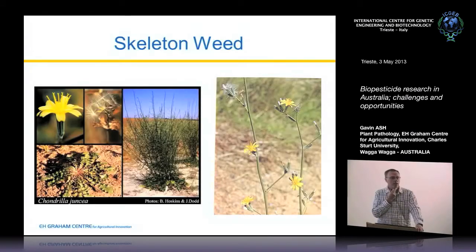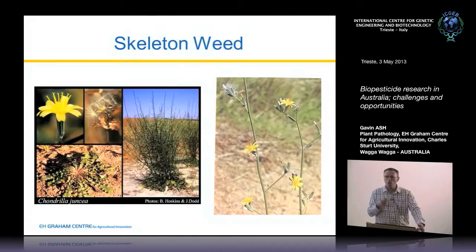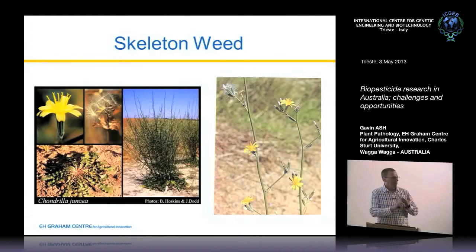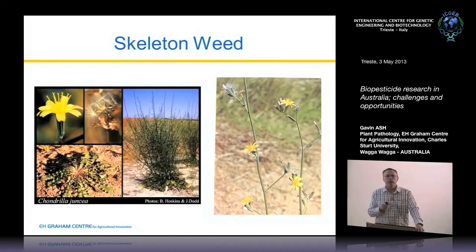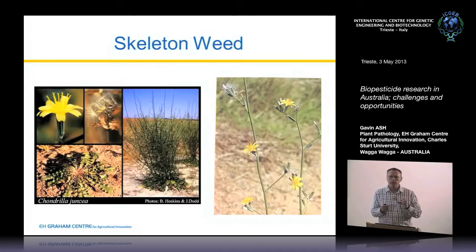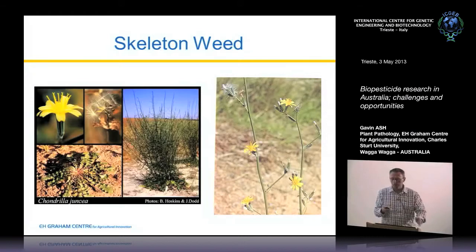We have a number of problematic weeds in Australia, many introduced from South America, South Africa, or the Mediterranean. One is skeleton weed, a common weed where we live, with three biotypes: narrow leaf, intermediate, and broad leaf. Scientists introduced a rust, very carefully checking its host range. It did a wonderful job on the intermediate — wiped it out. But because the rust was very specific, it didn't affect the other biotypes, and they reinvaded, leaving us with the same problem again.